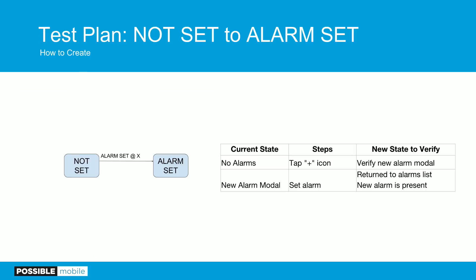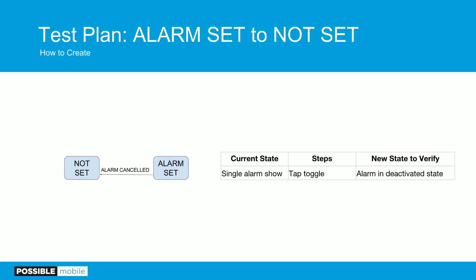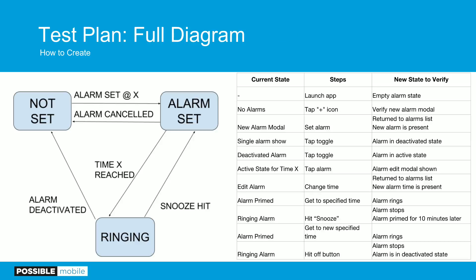This is readily convertible into a test plan. How do you do that? Simple — I go from one state to another. Going from not-set to alarm-set: I've got no alarms in my current state, I tap the plus icon and verify I get into the new alarm modal. Then I set the alarm and verify I have a new alarm present. Very easy. I'm just going from one state to the next, my steps follow the arrow, verifying I go from one state to another. You can then do the next case — single alarm set, follow the next arrow, go to alarm-canceled state, verify you're in the alarm-deactivated state.